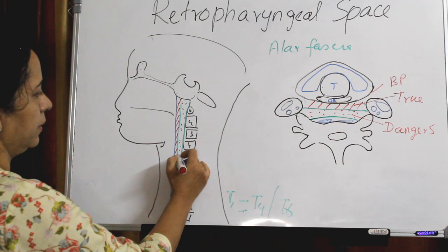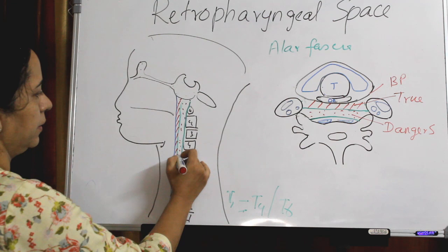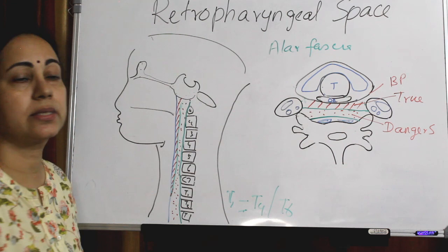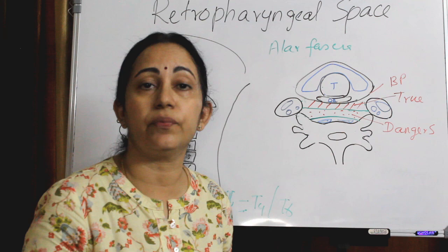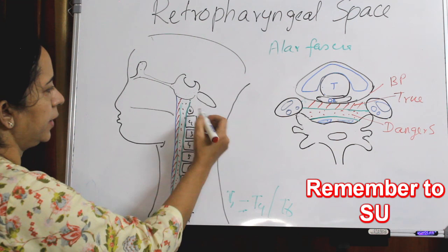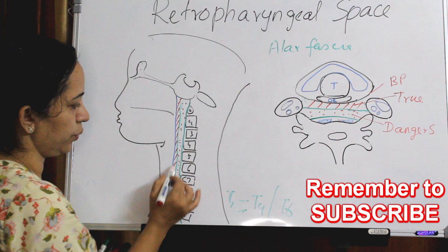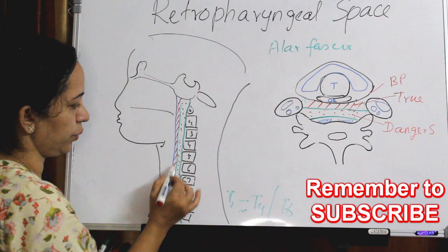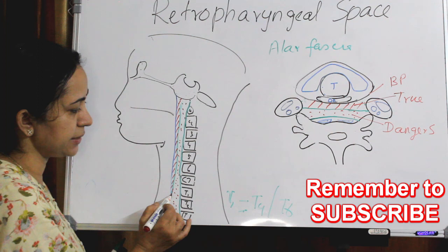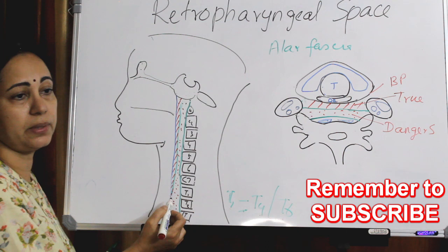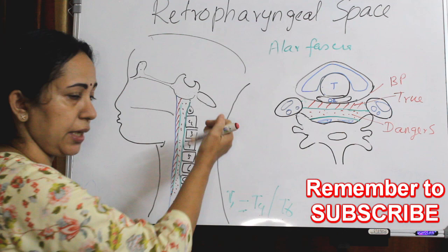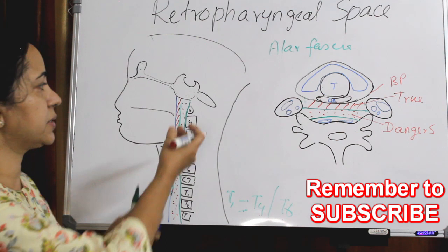But the danger space extends into the posterior mediastinum and ends at the level of the diaphragm. So you have to be very clear: the retropharyngeal space extends from skull base up to the level of T1 to T6, divided by the alar fascia into a true retropharyngeal space and a danger space. The danger space extends up to the diaphragm through the posterior mediastinum — that is why infection from the neck can easily go into the chest through this danger space.